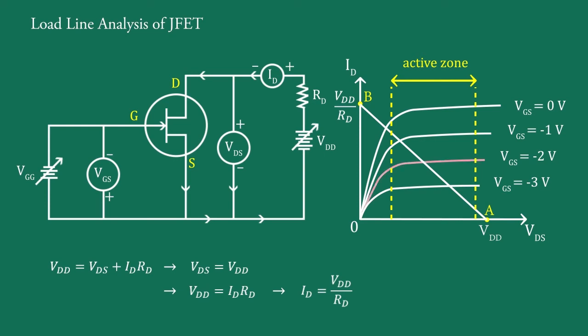Here, the characteristics curve for a DC gate bias voltage VGS equal to minus 2V cuts the load line at point Q. At that Q, the corresponding drain current would be ID and drain to source voltage VDS as indicated by dotted lines. The point Q (VDS, ID) indicated in figure for VGS equal to minus 2V is the optimum position.